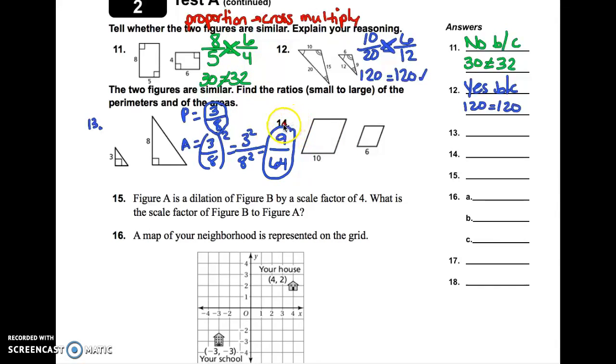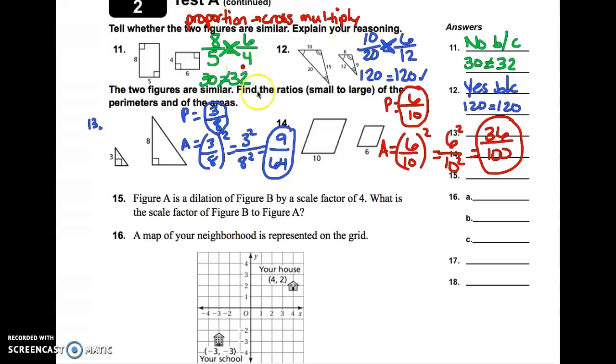Same type of thing on 14. We're looking at the ratios of the perimeters and of the areas. And still small to large. So, for perimeter, we just write it simply how it is in the drawing, 6 over 10. And you could simplify that, but I'm not going to make you do that for this purpose. Then, for the area, we're going to take that same ratio, but now we're going to square it. So, we have 6 squared over 10 squared. And 6 times 6 is 36. 10 times 10 is 100. So, there's your ratio for the areas of those two parallelograms. So, again, perimeter is just the ratio straight as it is in the picture. Area, the ratio, you have to square those numbers, and then you get your ratios for the areas.